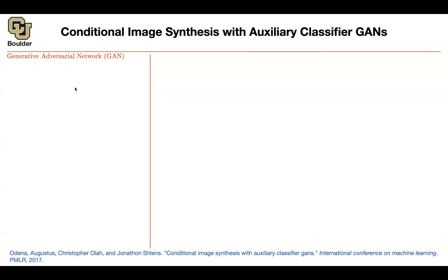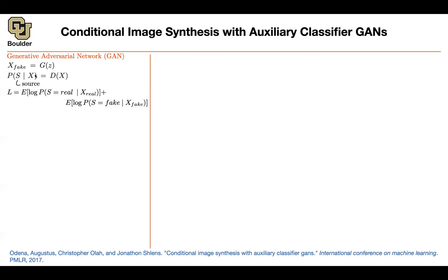A quick recap of GANs, because we need this notation now. You generate some latent code at random and push it through your generator, which gives you a fake image. You have a discriminator modeling the probability of the source given the image. We can think of D as outputting a two-dimensional vector, increasing the probability of real images being classified as real and fake images as fake. Previously the discriminator output a scalar — these are equivalent, since the probability of being fake is one minus the probability of being real.